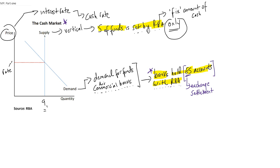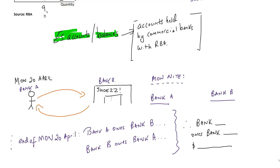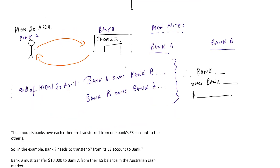Let's go into more detail on ES accounts — also known as ES balances, as the RBA refers to them in its material. The balance is simply the money that is in your account. Remember these exchange settlement accounts are held by commercial banks with the RBA. Let's take an example. Imagine the date is Monday the 20th of April.